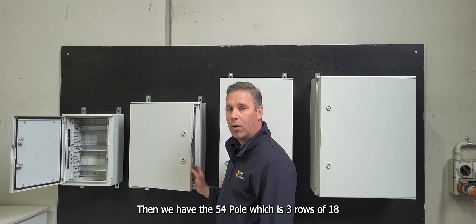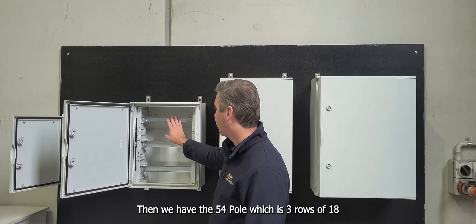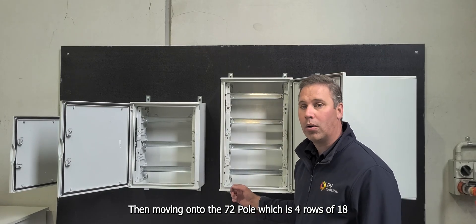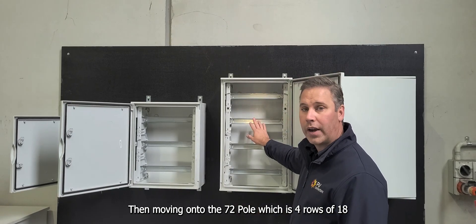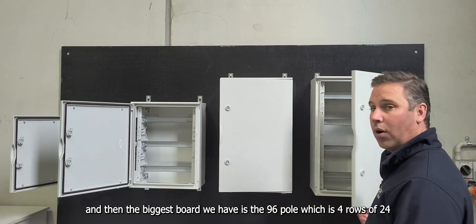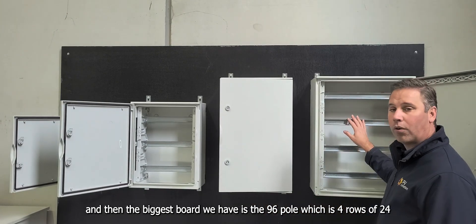Then we have the 54 pole which is three rows of 18. Then moving on to the 72 pole which is four rows of 18 and then the biggest board that we have is a 96 pole which is four rows of 24.